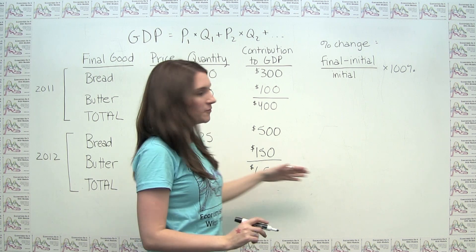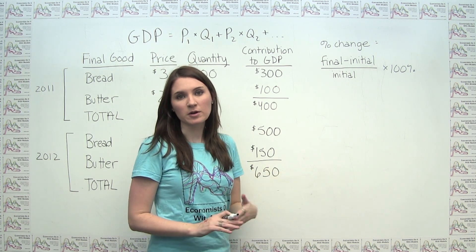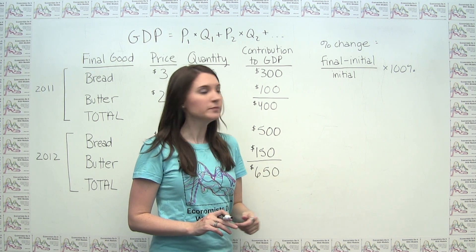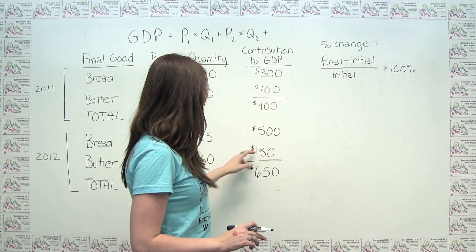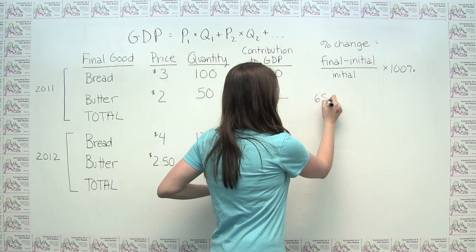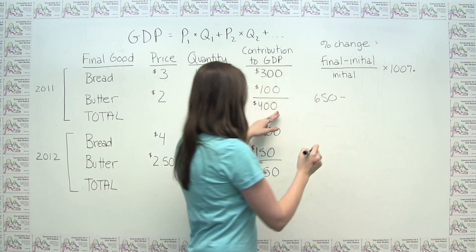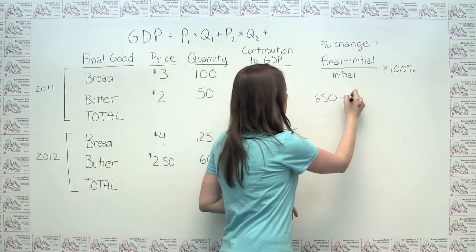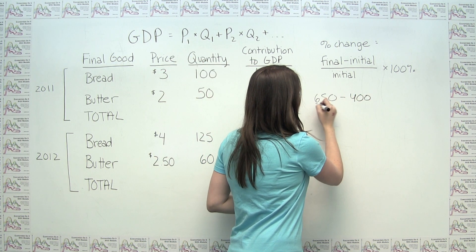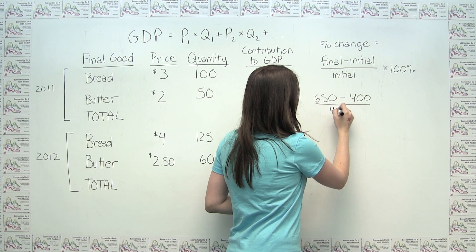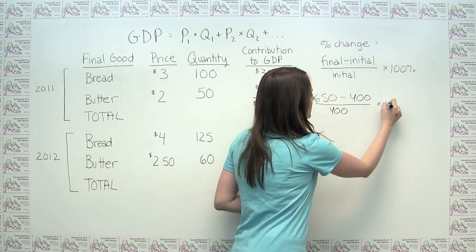So in this case, our final is our 2012 value, and our initial is our 2011 value. So we can just say final minus initial is just $650 minus $400, divided by initial, which is $400, times 100%.